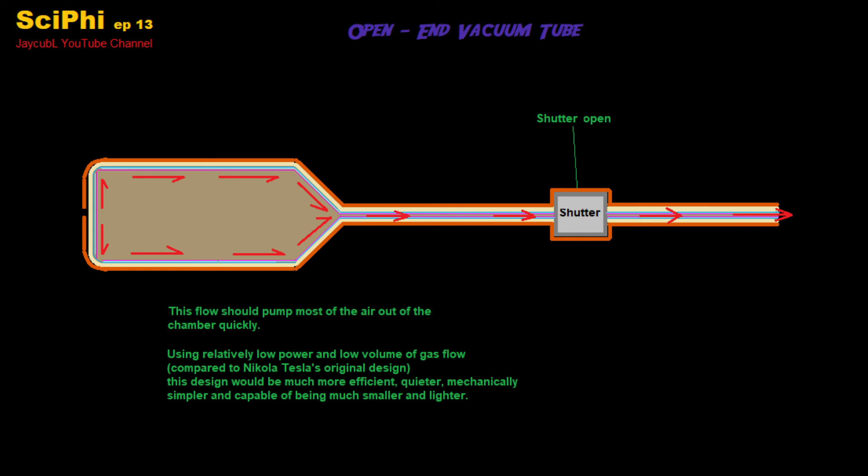By having the barrel be very narrow, this will prevent a column of gas from flowing in reverse back into the chamber.